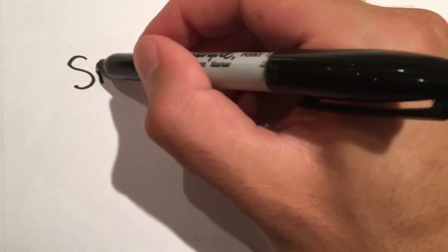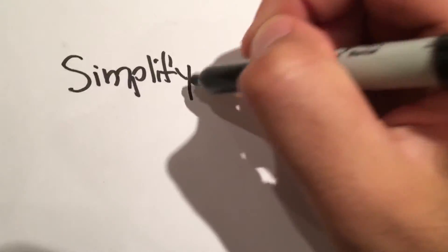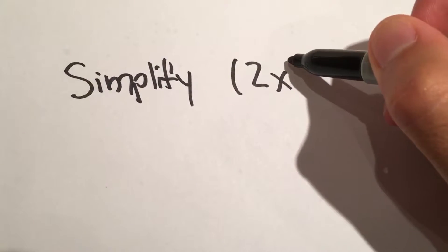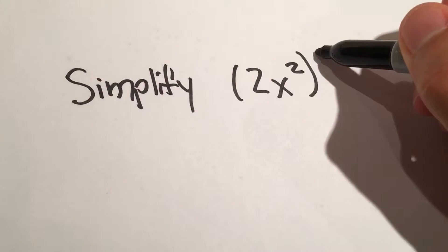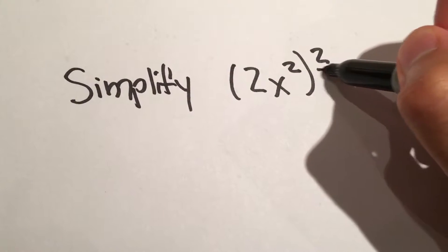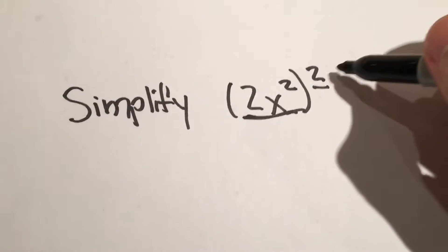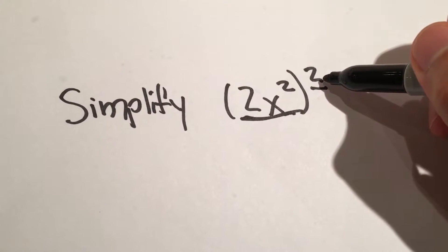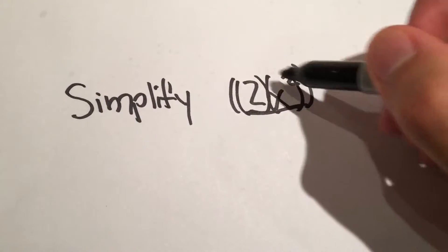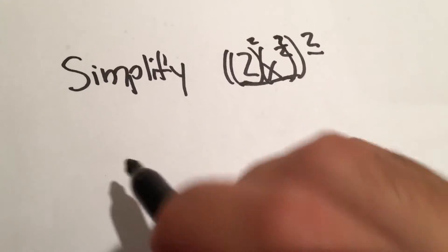We're going to simplify 2x squared to the second power. Because we have this term right here, we can take the square and apply it to each of these smaller terms. So imagine we do that — to make it a little easier to show.